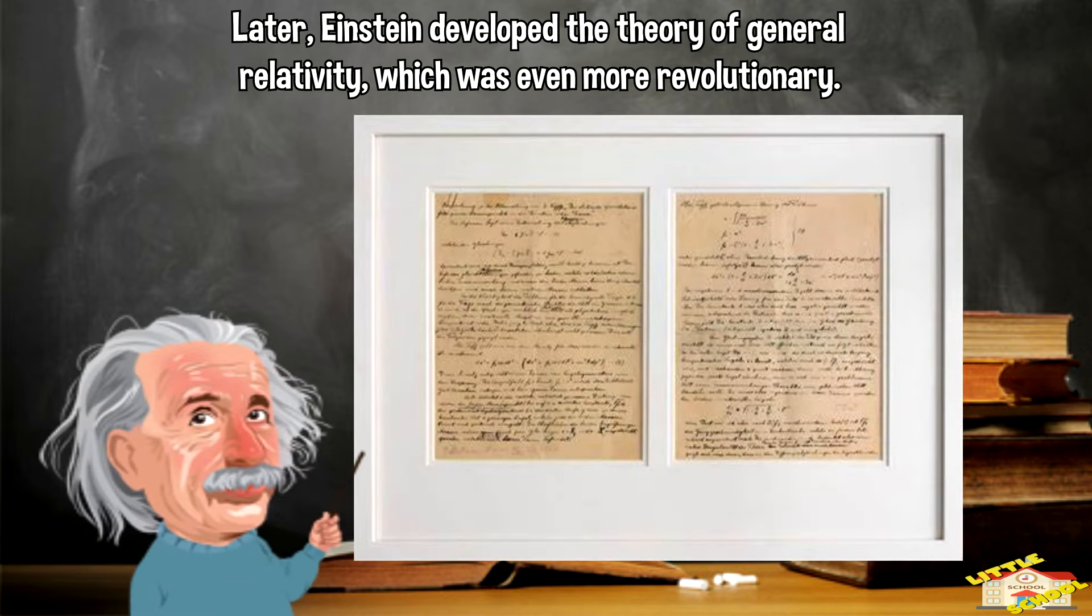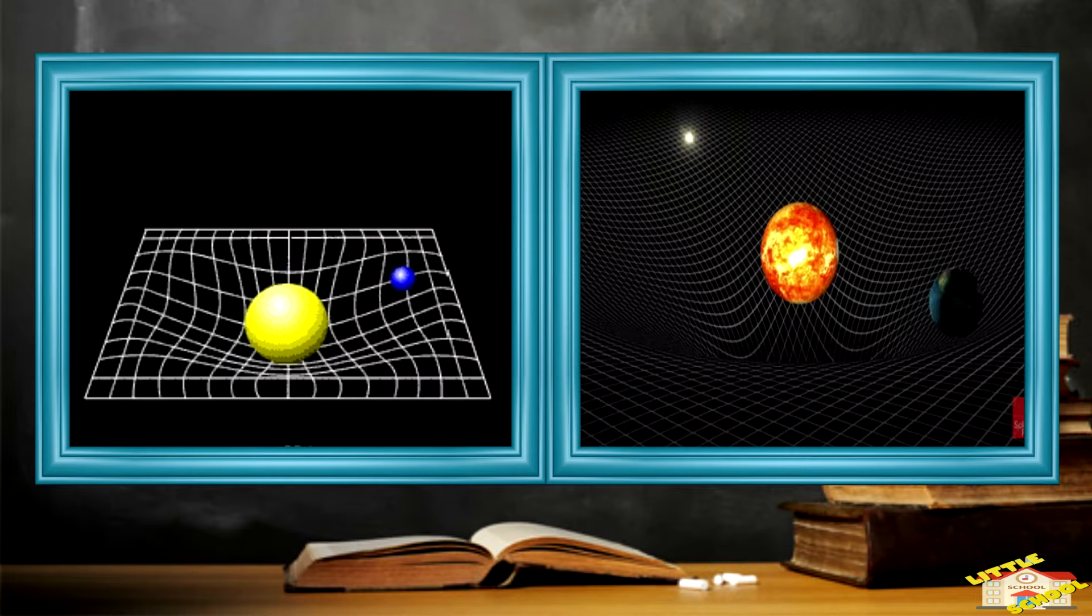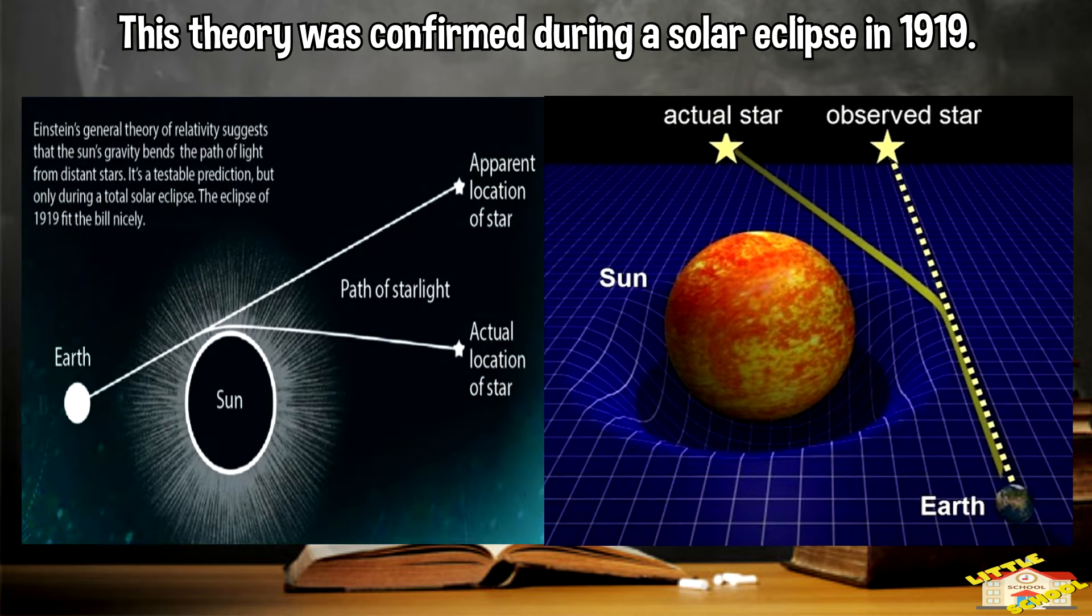Later, Einstein developed the theory of general relativity, which was even more revolutionary. It described how gravity works not as a force, but as a curvature in space and time, caused by massive objects like planets and stars. This theory was confirmed during a solar eclipse in 1919 when observations matched Einstein's predictions.